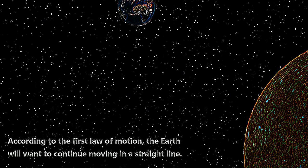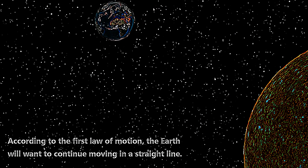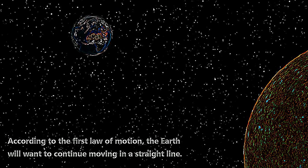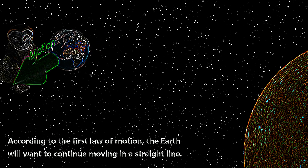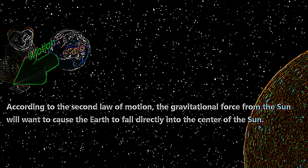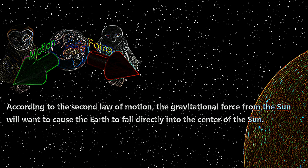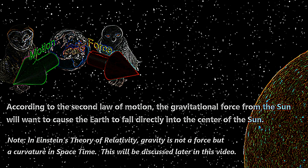According to the first law of motion, the Earth will want to continue moving in a straight line. According to the second law of motion, the gravitational force from the Sun will want to cause the Earth to fall directly into the center of the Sun. In Einstein's theory of relativity, gravity is not a force but a curvature in space-time — this will be discussed later in this video.